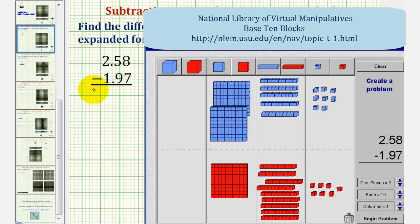And because we're subtracting one and ninety-seven hundredths, we'll represent one and ninety-seven hundredths in red. So we have one red flat for one, nine longs for nine tenths, and seven bits for seven hundredths.